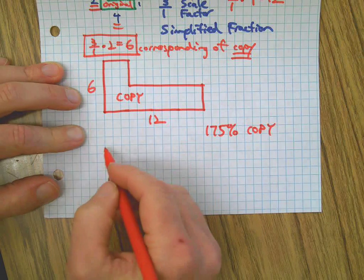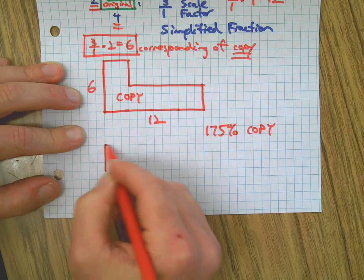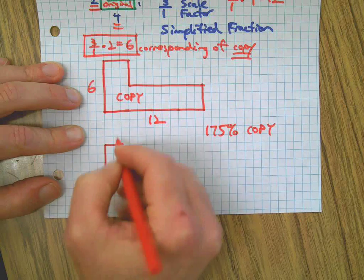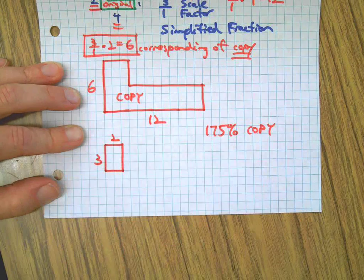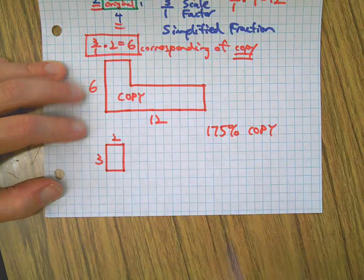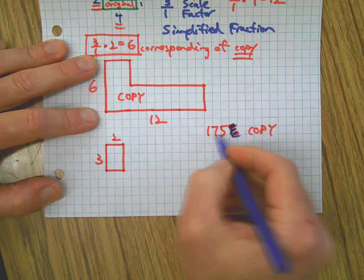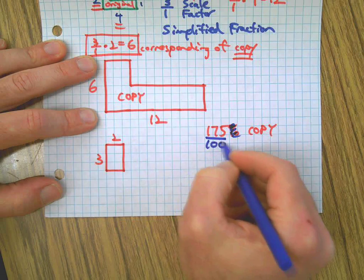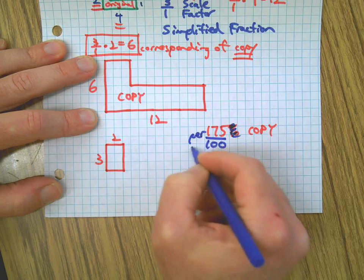So if I'm asked to make a copy that's 175% of the original, and let's just make up a little original here, if I'm going to make a 175% copy of that, well, I get rid of the percentage, I put it over 100 because that's what percent means.